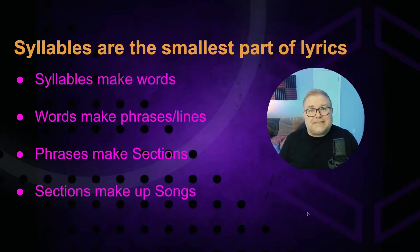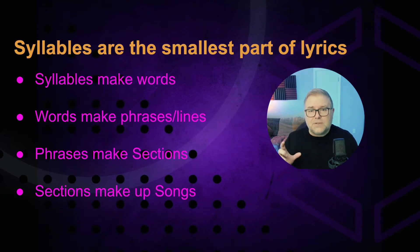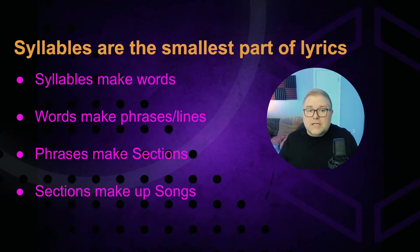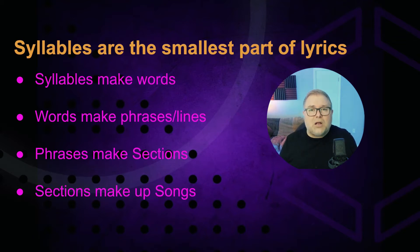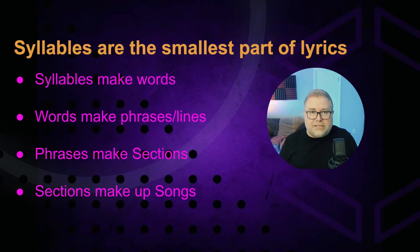Syllables are the smallest part of your lyrics — they're the building blocks that make up words. Words go together to make phrases and lines, phrases add up to a section, and sections add up to your whole song. So syllables are the smallest building block within your lyric, and your lyrics have a lot of information that transfers over to your melody.